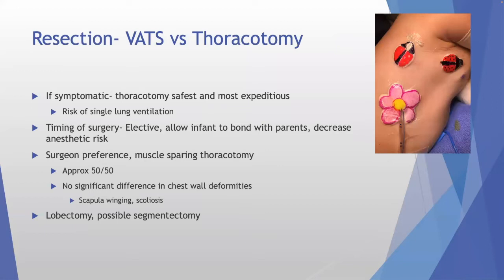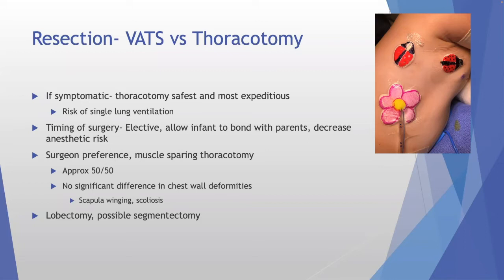For resecting CPAMs you can do VATS or thoracotomy — still largely provider preference. Port sizes include a 3 mm and 5 mm incision. An entire lobe can be pulled through a 5 mm incision if the lesion is cystic and decompresses; otherwise the incision is extended just enough to extract the lobe. Kids recover very well from thoracoscopic surgery. If they're symptomatic, it's safer to do a thoracotomy and get in and out. Single lung ventilation is one of the challenging aspects — pediatric anesthesiologists experienced with thoracoscopic surgery are essential.